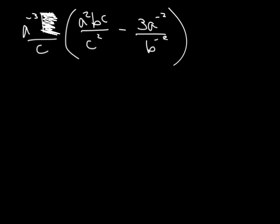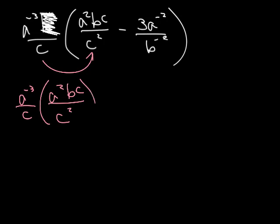So now I'm going to distribute the a to the negative 3 over c times this here. a to the negative 3 times a squared bc over c squared. We're going to multiply those together. And then in a minute, we're going to multiply that times that. So let's multiply the a to the negative 3 over c times this first term first.